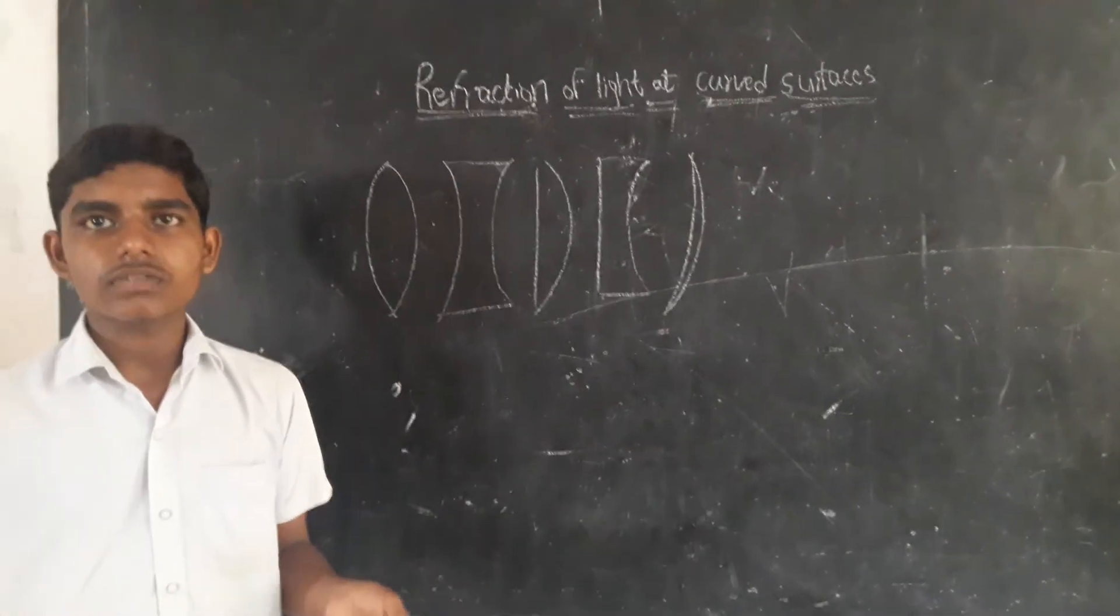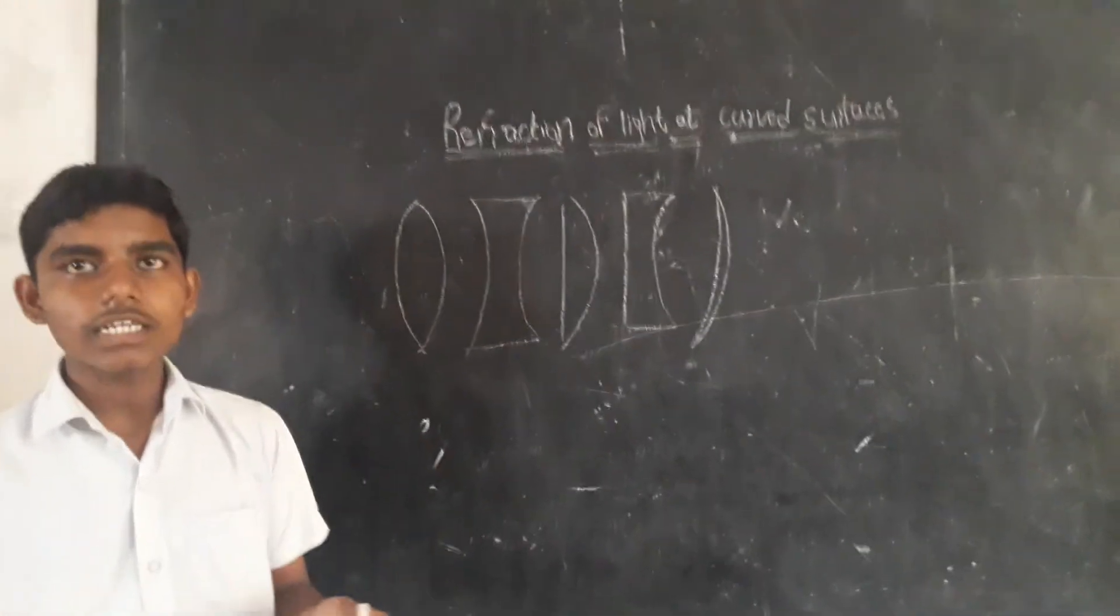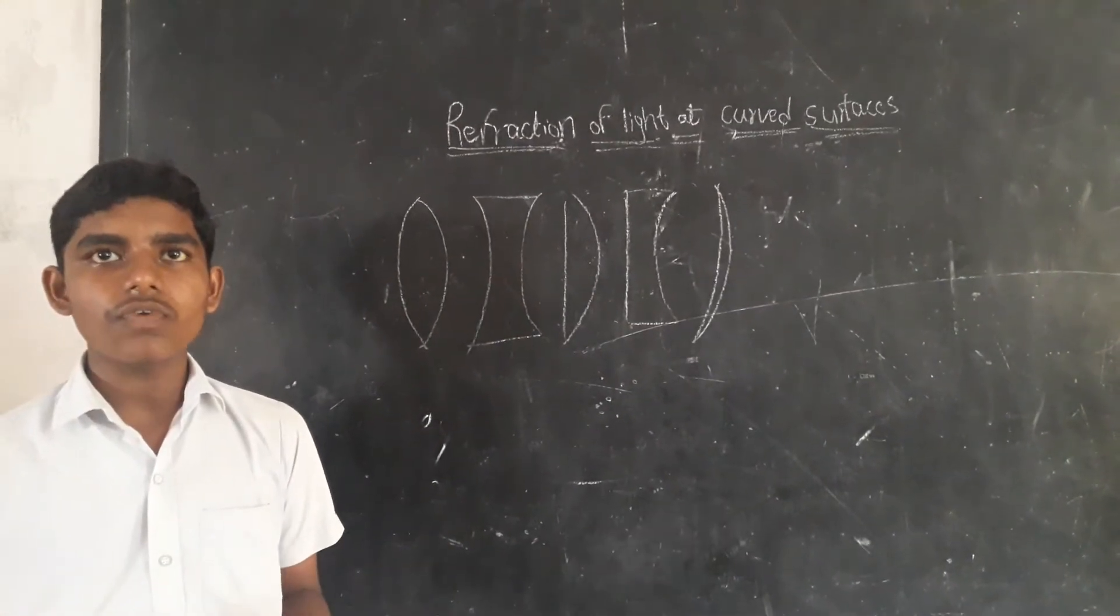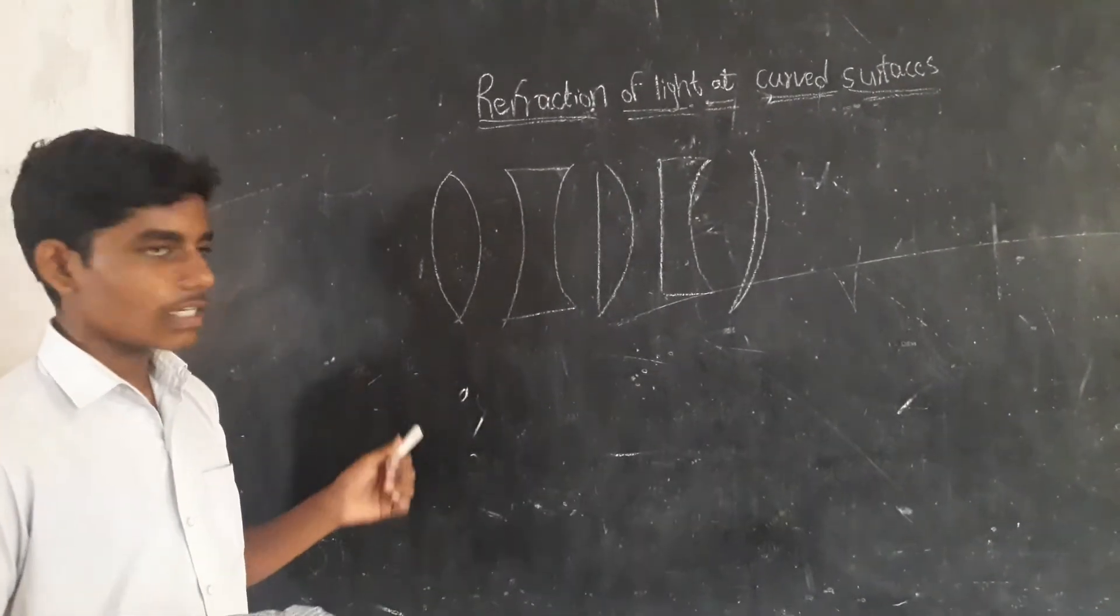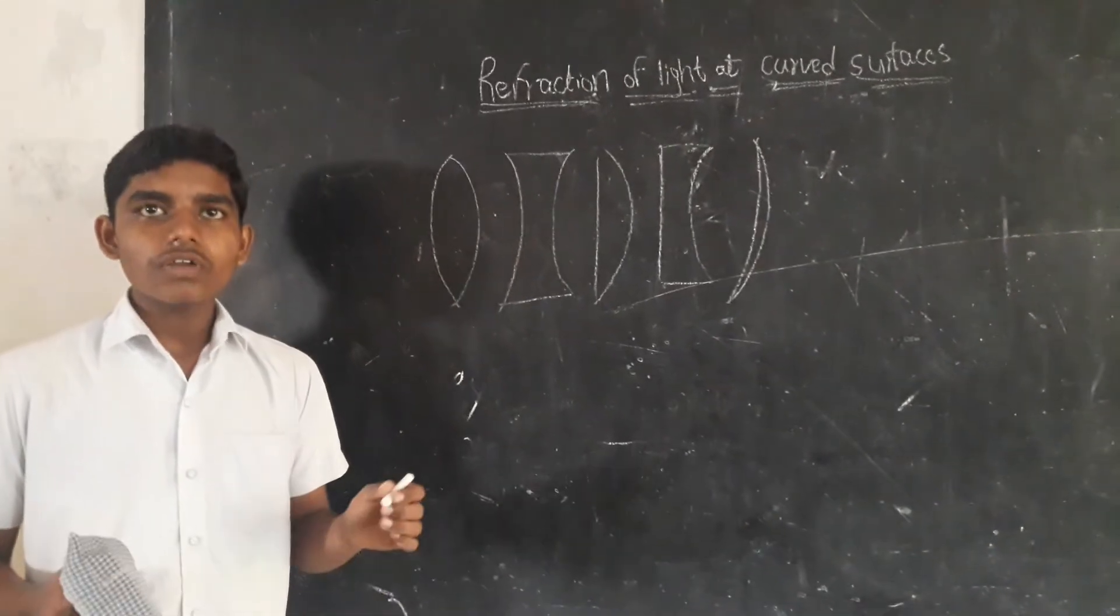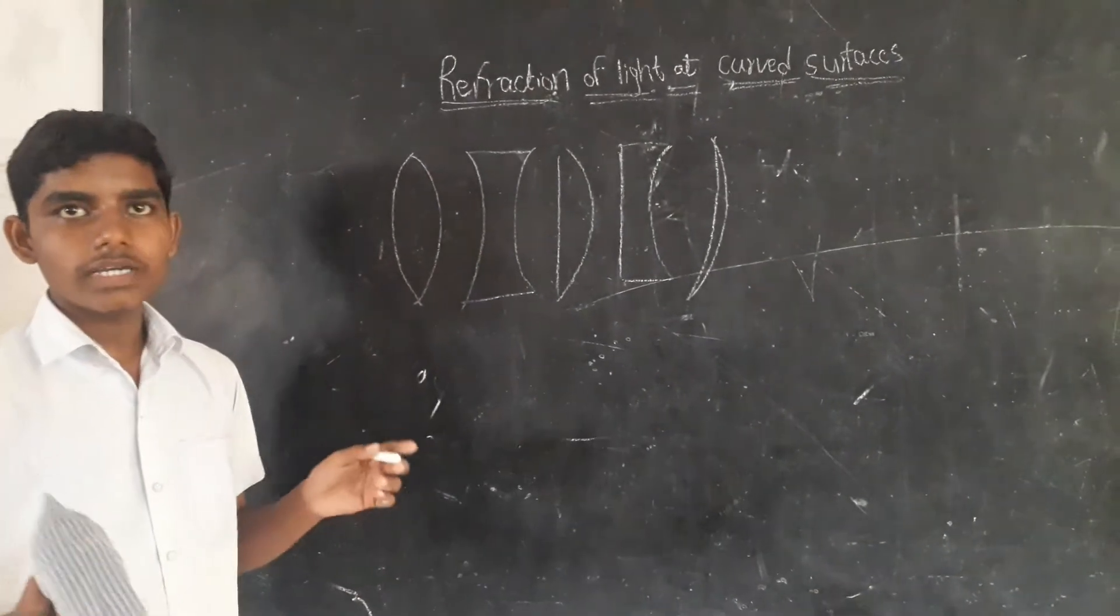Now, what is focus? The point from which light appears to emit, that point is called focus or focal point. What is focal length? The distance between the focus and the optical center is called focal length of the lens. It is denoted by F.